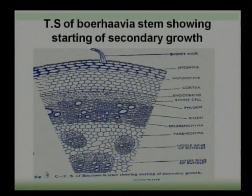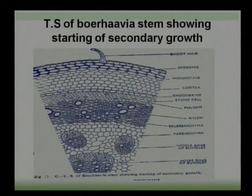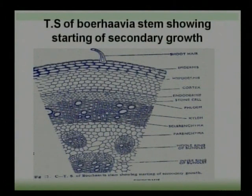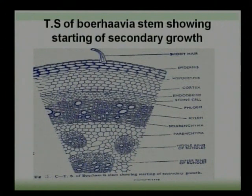The middle ring consists of 6 to 15 vascular bundles. Like the outer ring, these bundles are also conjoint, collateral, and open, and they have intrafascicular cambium. These bundles are also known as medullary vascular bundles because the middle ring and the inner ring are present in the pith region.